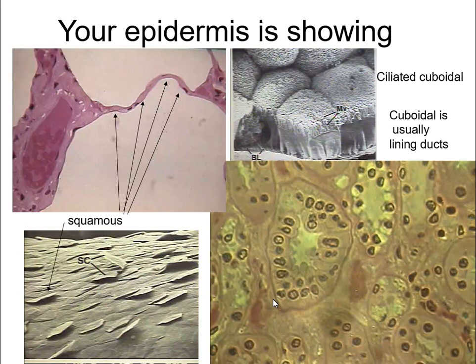Over on the top right are ciliated cuboidal cells. Cuboidal just means cube-shaped or square. You're going to find cuboidal cells lining ducts that are secreting something. They generally occur in a ring, and you can see the lumen — the hole — in the middle of the ring. So cuboidals are pretty easy to detect: they're in a ring, they have a hole in the middle, and they're square.